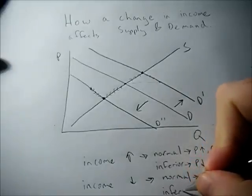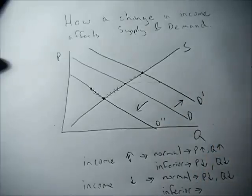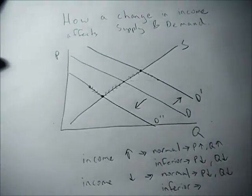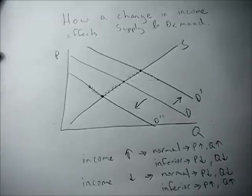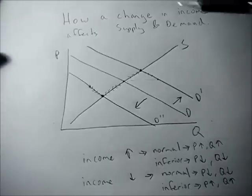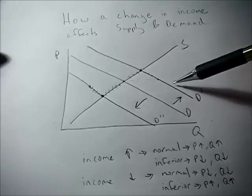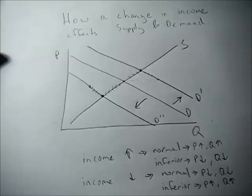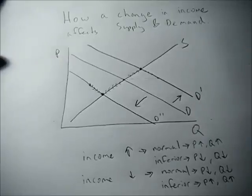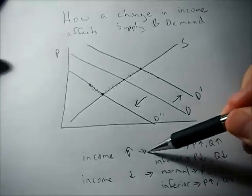Now if it's inferior and we get laid off, we're going to consume more of that good. We have to give up some steak to survive and buy more Top Ramen. So demand will shift right. Equilibrium price will rise and equilibrium quantity will rise.